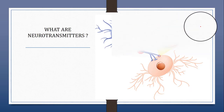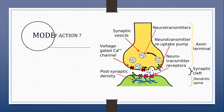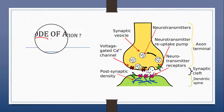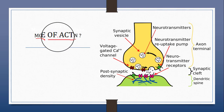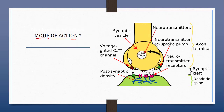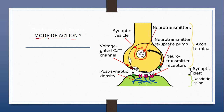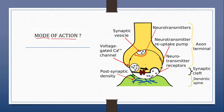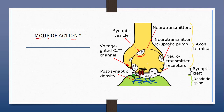Next we'll talk about the mechanism of action, or simply the mode of action, of neurotransmitters. Neurotransmitters can transmit signals across a synapse — as you can see here on the screen, we have provided a picture of a synapse — at various locations: from one neuron to another target neuron, and secondly at the neuromuscular junction, that is the NMJ junction.